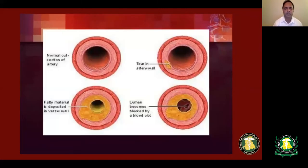This is a cross-sectional view of coronary vessels. On the upper left you can see a normal vessel. On the upper right you can see a vessel that has sustained an injury, resulting in deposition of cholesterol plaque, and gradually the plaque increases in size, resulting in narrowing of the vessel.